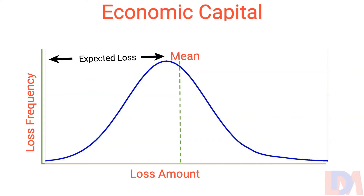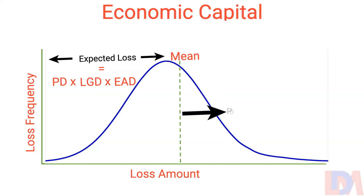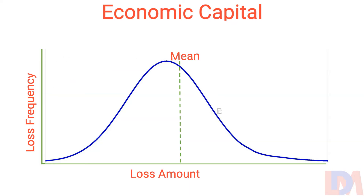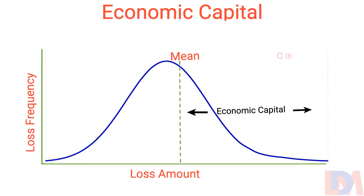Expected credit loss is computed by multiplying the probability of default of the counterparty, the loss given default, and the exposure at default. However, the possibility of loss still remains beyond the mean point. Therefore, banks and financial institutions are required to maintain economic capital to meet the loss beyond the mean point of the loss distribution, up to the desired confidence level.